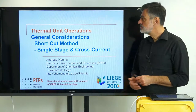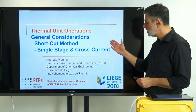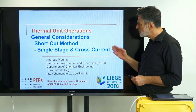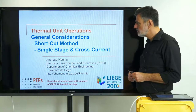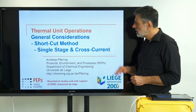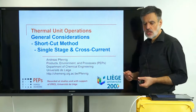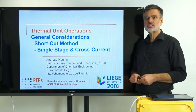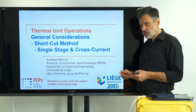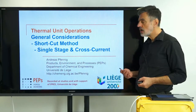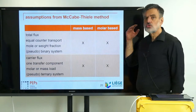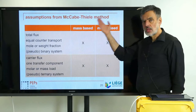Welcome back to this video series on thermal unit operations. We are still in the section on general considerations and today I would like to introduce some shortcut methods, especially for a single stage and the cross-current multi-stage process. I would like to remind us of the basis, which is the same as we have been using for the McCabe-Thiele diagram — the generalized McCabe-Thiele diagram that can be used for an arbitrary process.